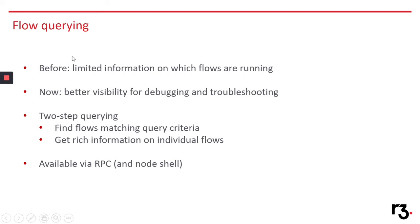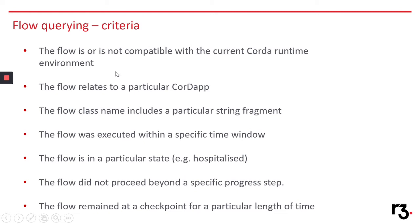What kind of criteria have we made available? There's an overview on the next slide. You can query for flows that are part of a specific code-up, flows whose name includes a particular string, and flows that have been running for a certain amount of time.